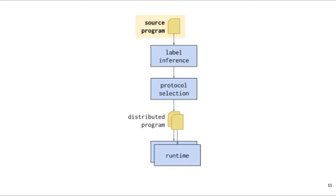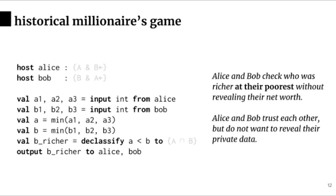I will now describe each phase of the Viaduct compiler. First, let's talk about what Viaduct source programs look like. A Viaduct program has two parts: a list of hosts or principals that will participate in the distributed program, and the program itself. Each host declaration has an authority label, which describes the trust conferred to that host. This authority label, along with other security labels in the program, we will come back to later.